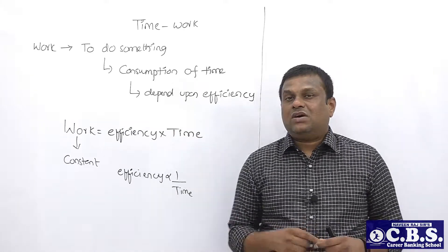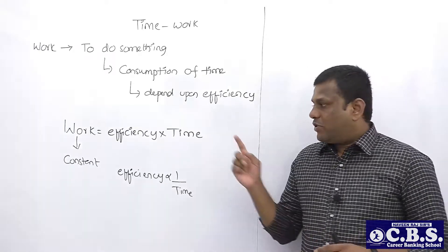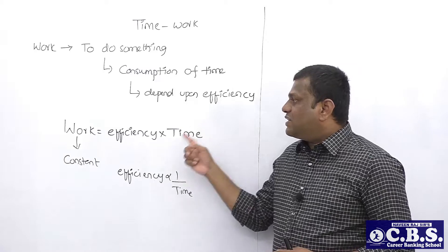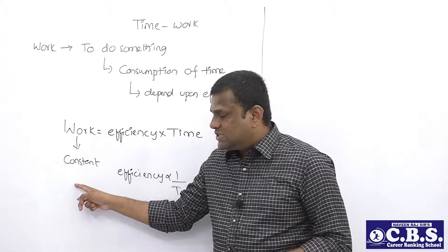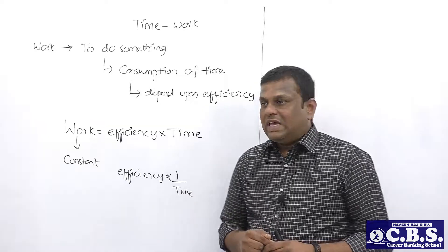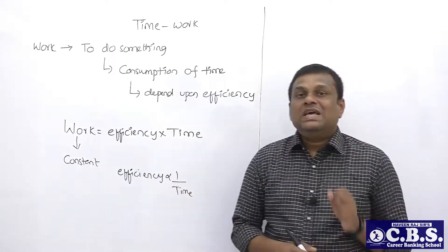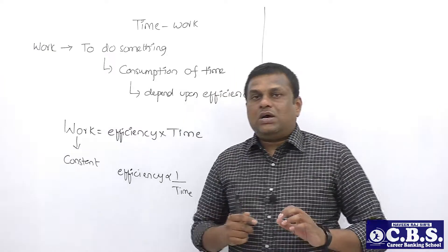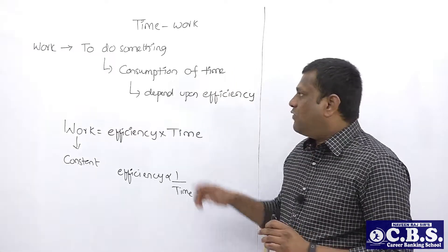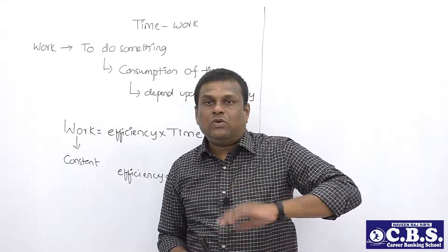Mathematically, the value on the left side of the equals sign is the result, and the values on the right side are the production values. If the production values are connected by a product symbol and the result is constant, the production values are inversely proportional to each other. Here, efficiency and time are inversely proportional. Since time depends on efficiency, if you want to estimate time, you first have to estimate efficiency.